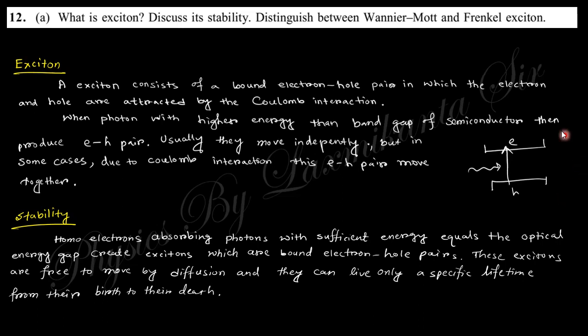This is called exciton, and they are stable because the coulomb interaction holds these two particles together, making them a single thing - the exciton.